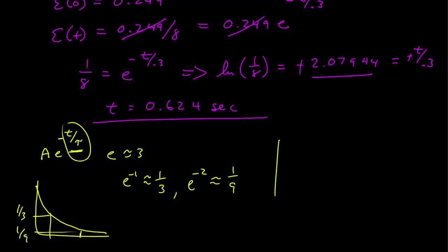So since tau equals 0.3, when T equals 0.3, it should be about a third of its value, and when T equals 0.6, it should be about a ninth of its value. And we see at 0.624, we said it was one-eighth. One-eighth is about one-ninth, and so this is just checking whether the answers we're getting are reasonable. They're reasonable, and that's a useful check.